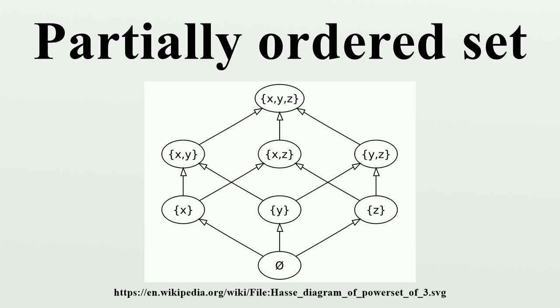Number of partial orders: Sequence A001035 in OEIS gives the number of partial orders on a set of n labeled elements. The number of strict partial orders is the same as that of partial orders. If we count only up to isomorphism, we get 1, 1, 2, 5, 16, 63, 318.